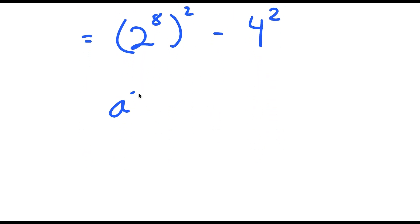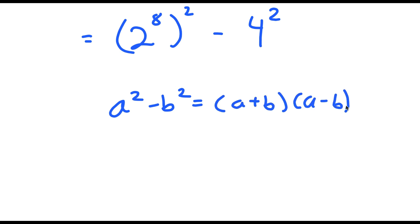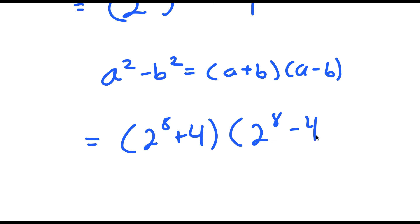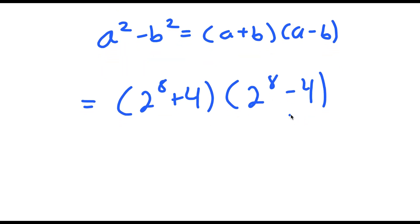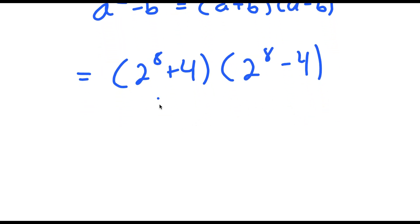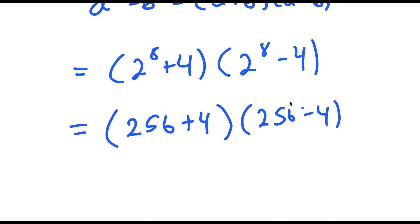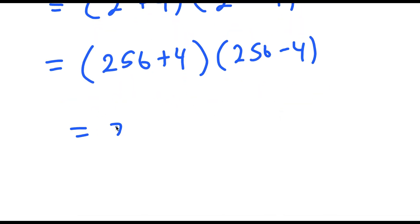Now if I have something in the form a squared minus b squared, this is equal to a plus b times a minus b. So this turns into 2 to the power of 8 plus 4 times 2 to the power of 8 minus 4. Now 2 to the power of 8 is the same thing as 256, so I get 256 plus 4 times 256 minus 4, which is equal to 260 times 252.